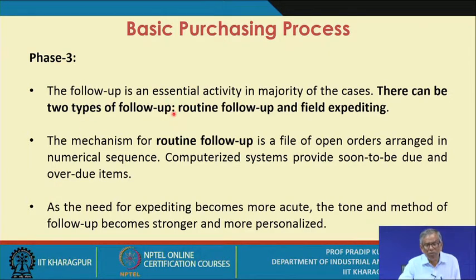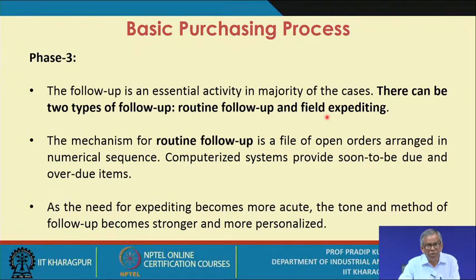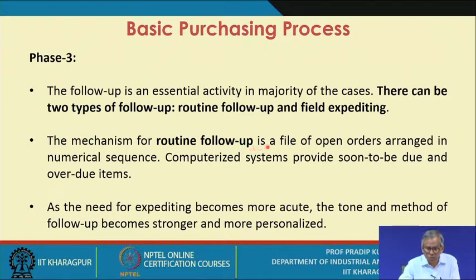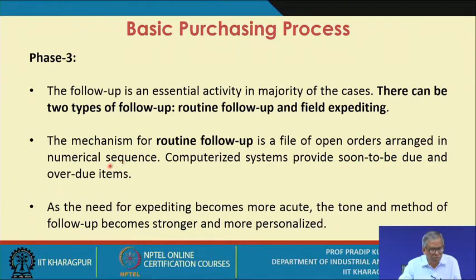There can be two types of follow-up: routine follow-up, and the second is referred to as field expediting for important orders. For field expediting, especially with sole sourcing, when it is a very important order you do not want to take any risk of non-supply at the specified time. The mechanism for routine follow-up is very simple — you create a file of open orders, which is a very common occurrence in any purchase department, arranged in numerical sequence.